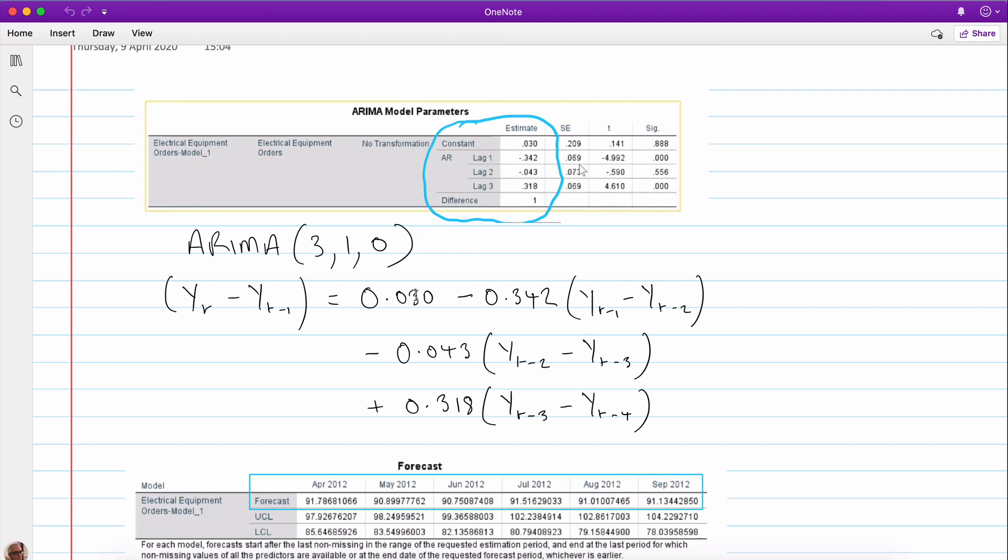Then we have a constant 0.030, and then the coefficient on the first lag is minus 0.342. Now notice that is the lag of the first difference, so what that means is that these two here get lagged by one period, so that becomes yt minus one and that becomes yt minus two.